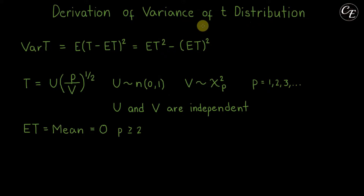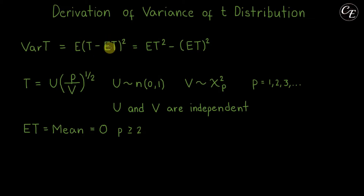The variance for the t-distribution can be expressed with this formula: the expectation of the square of t minus the expectation of t. And we have another formula for the variance of t which is this, and it is derivable from here.